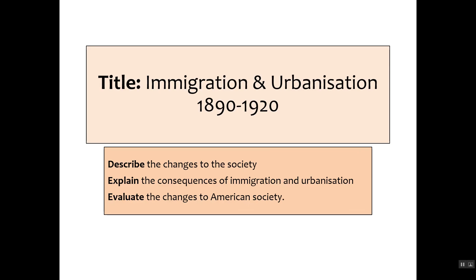Putting it all together, we've seen in the last few videos that mass urbanisation in the Northeast, the West, and the South has led to significant melting pots in these cities. Immigration equally has a huge consequence on the United States. In the next video we'll be delving deeper into segregation and African Americans' experience in the United States.